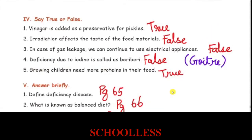True or false: Vinegar is added as a preservative for pickles — True. That irradiation affects the taste of food materials — False, because irradiation does not affect the taste of food materials.